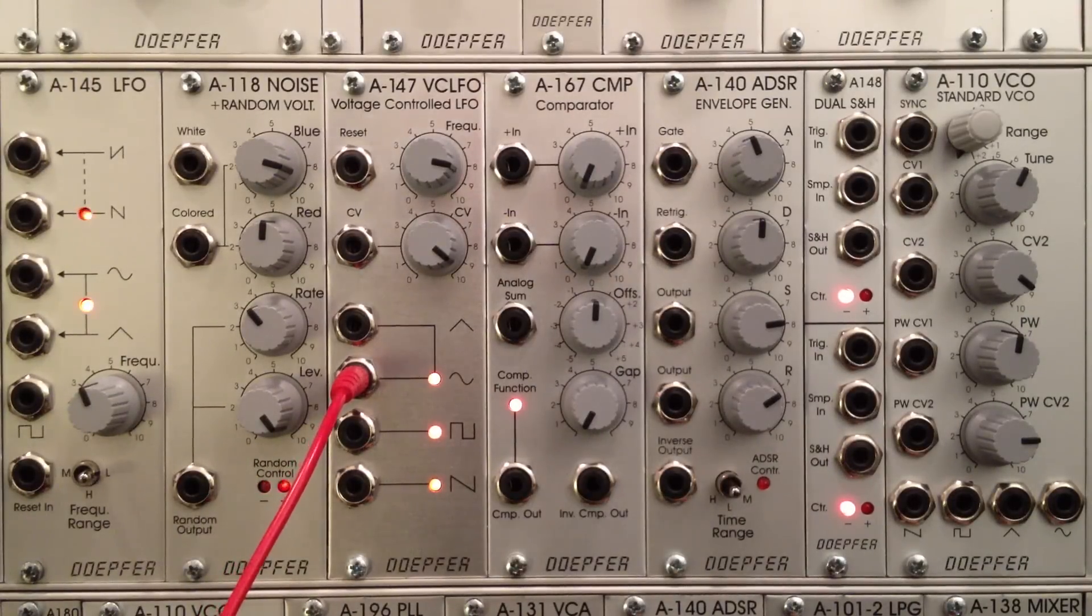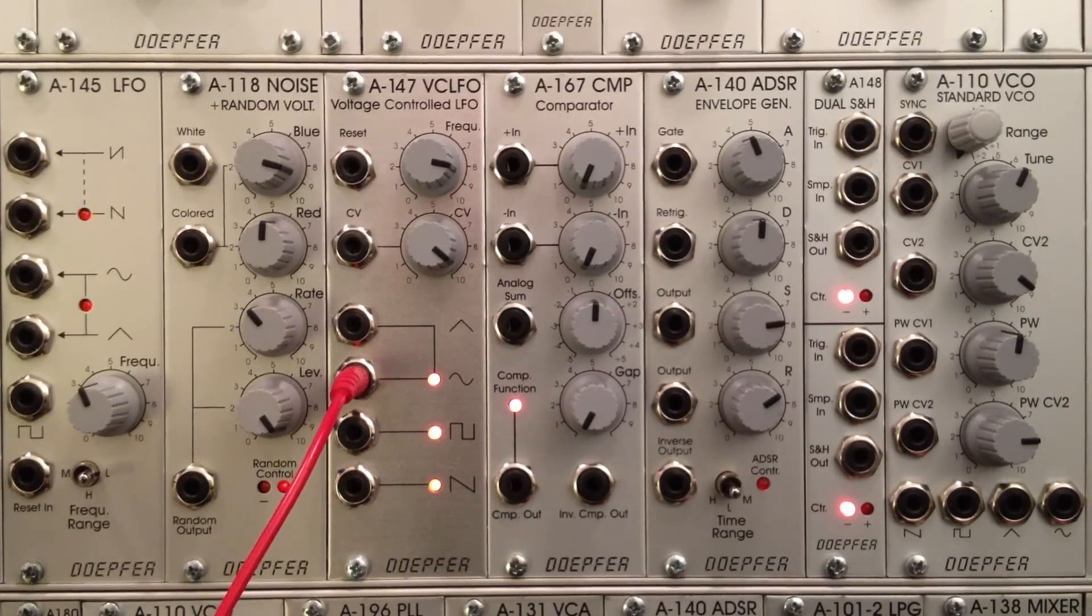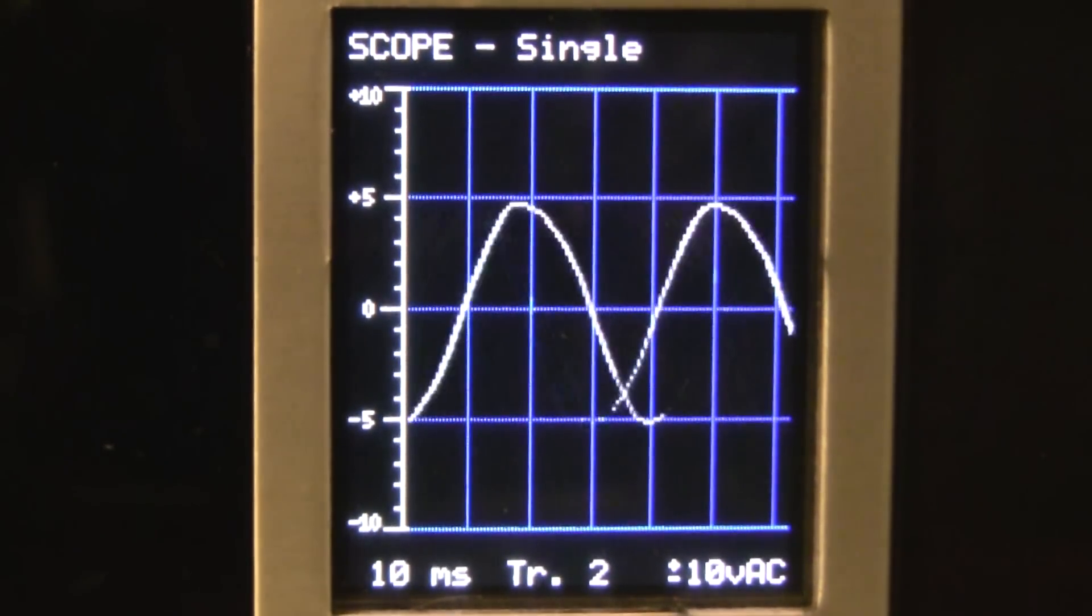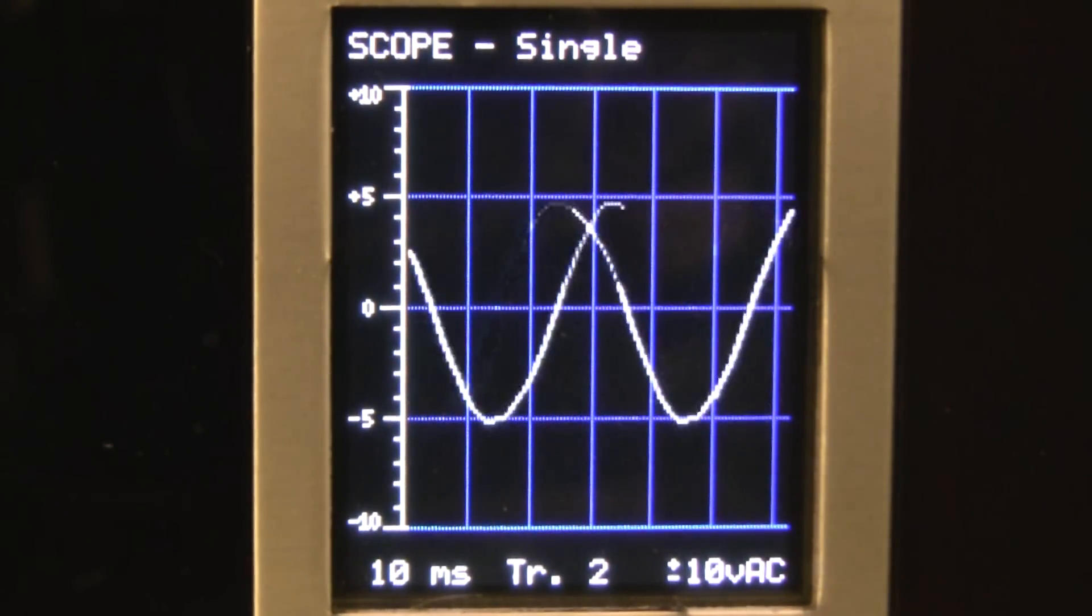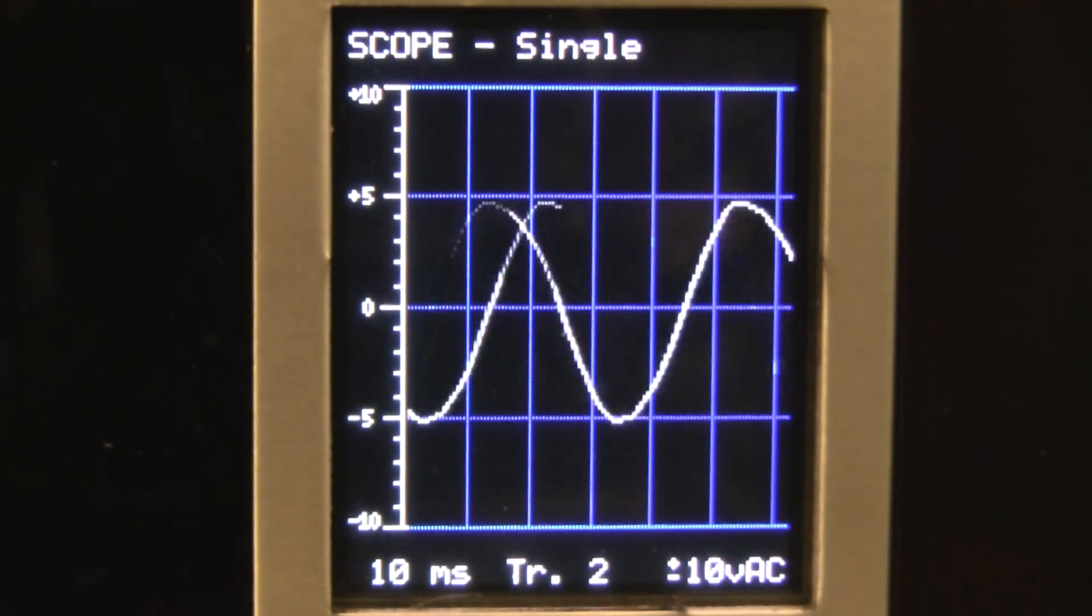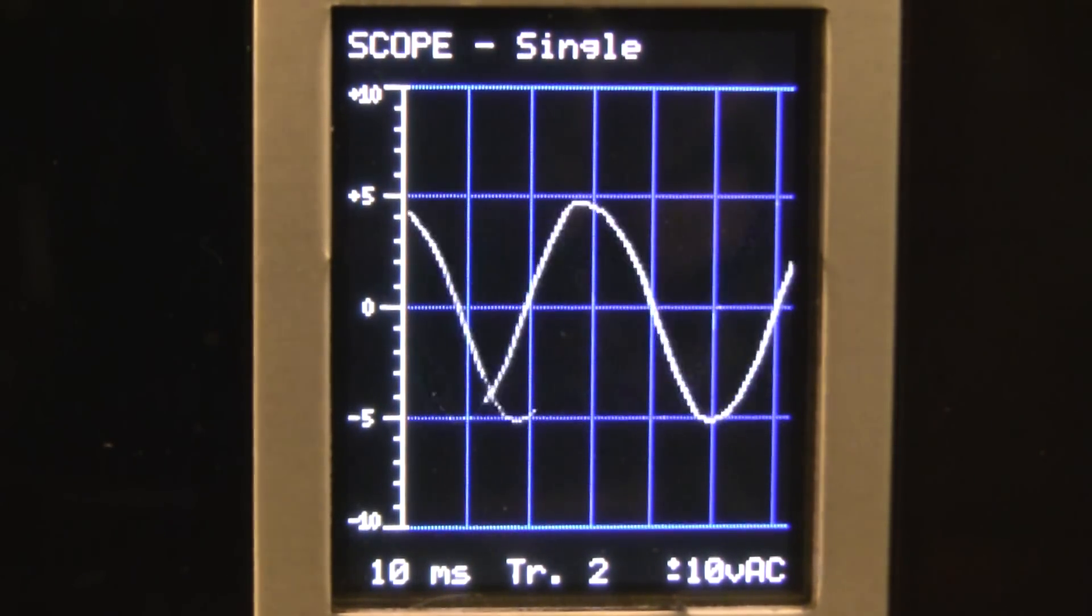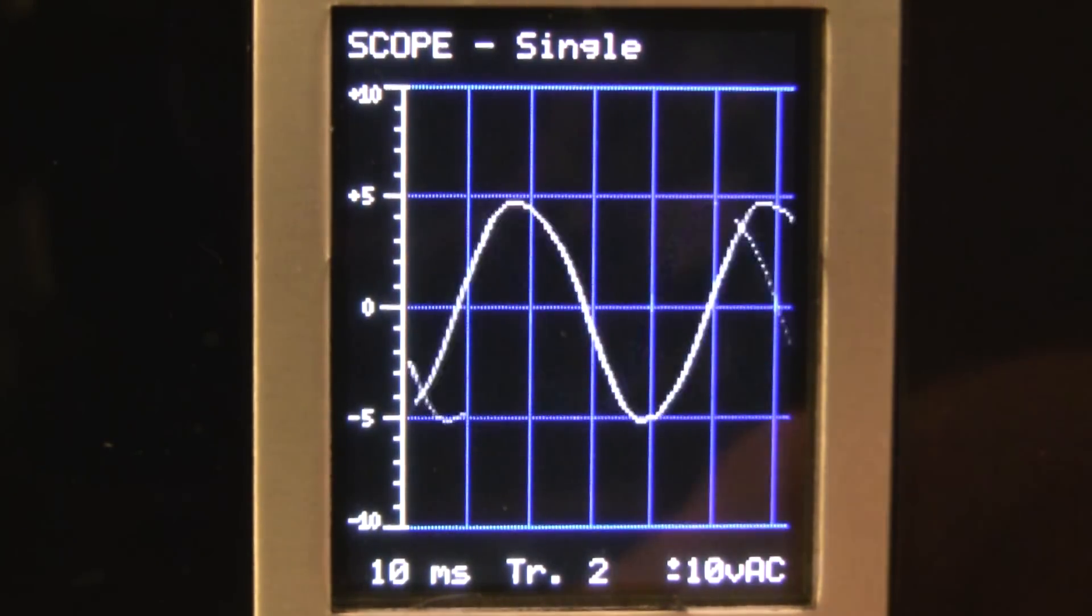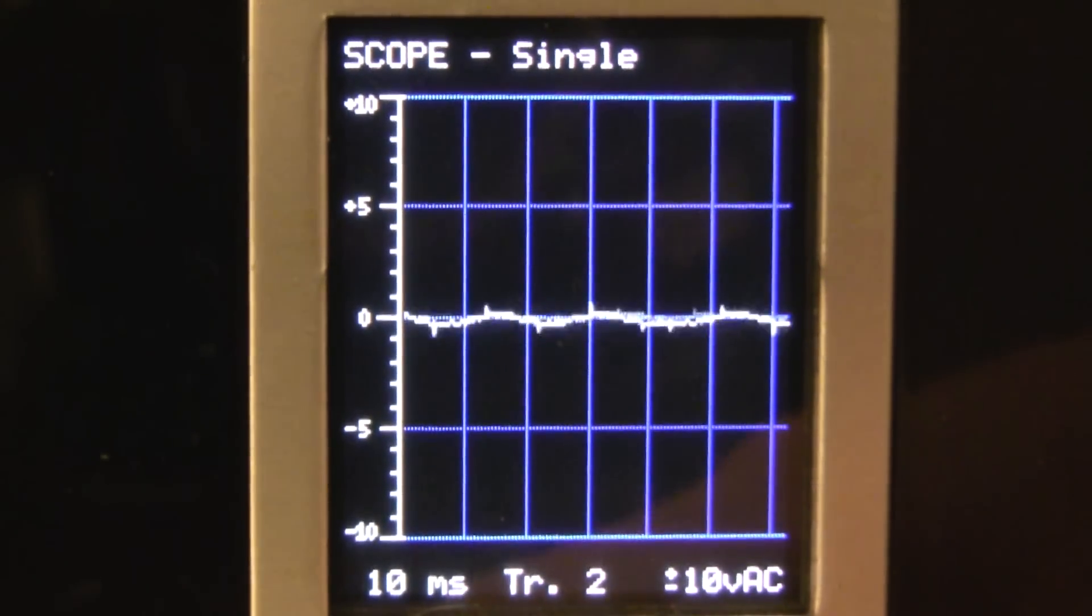So you can see what exactly this looks like before we do any kind of modifications to it via the comparator. So patching it in, and there is our sine wave. Okay, so now you can see that that is just a normal sine wave. That's exactly what you expect, nothing funny going on, nothing up my sleeve so to speak.